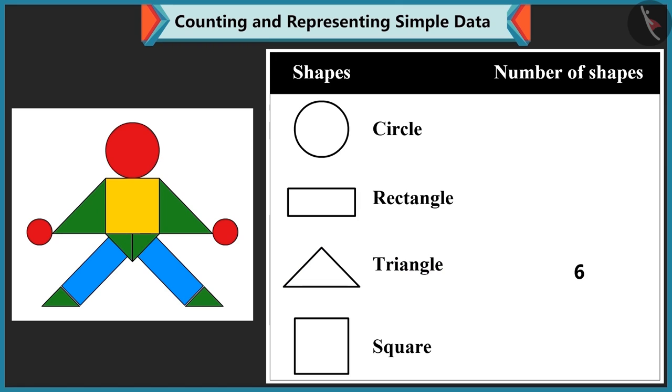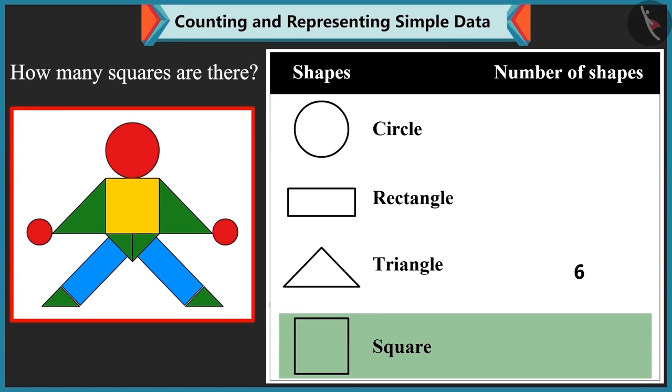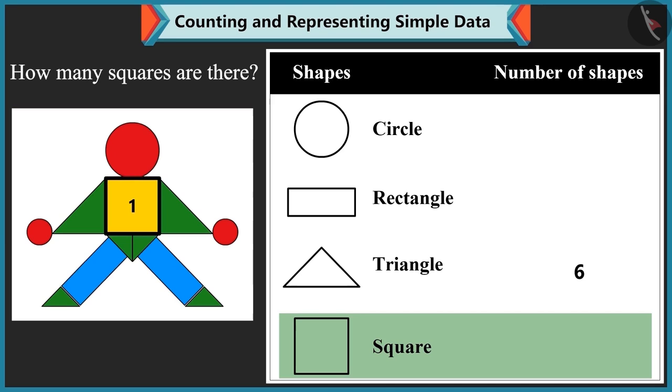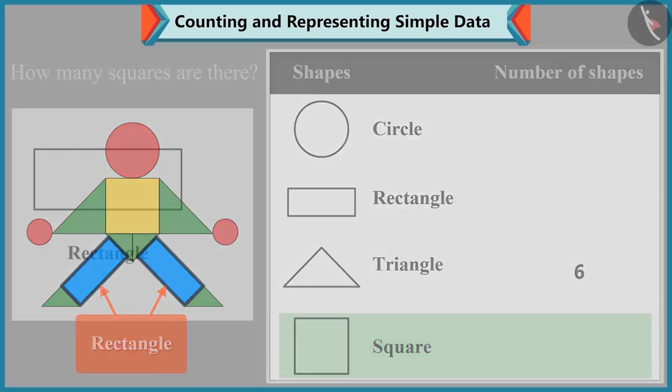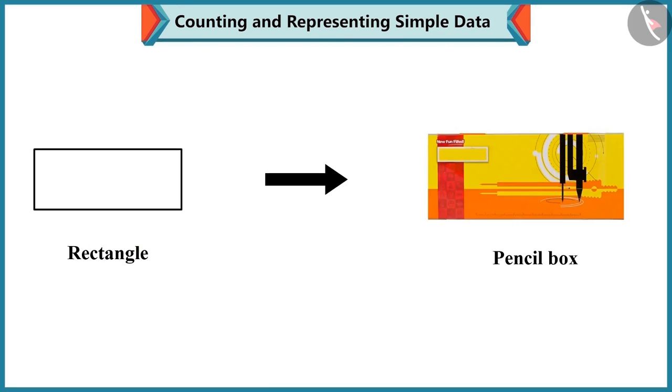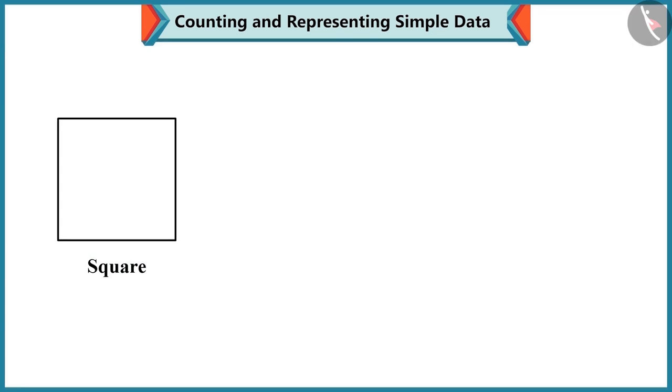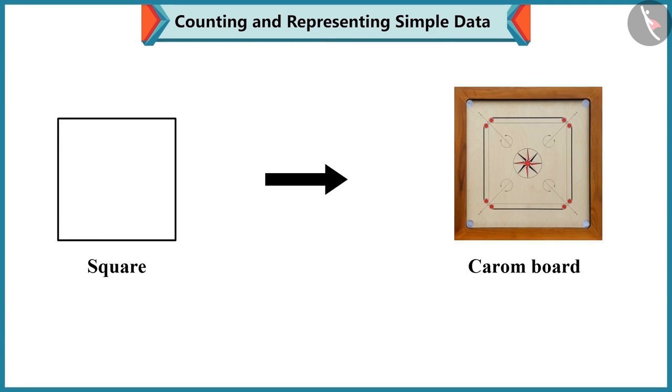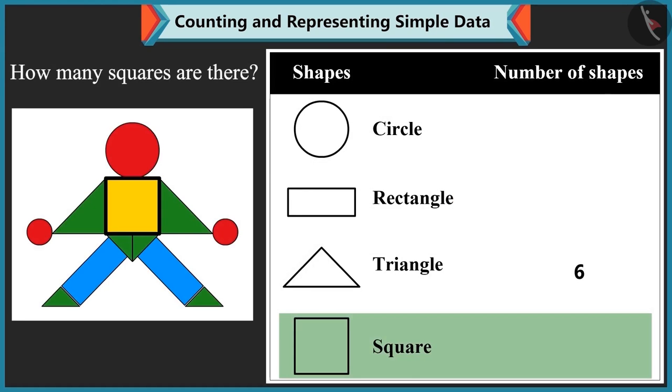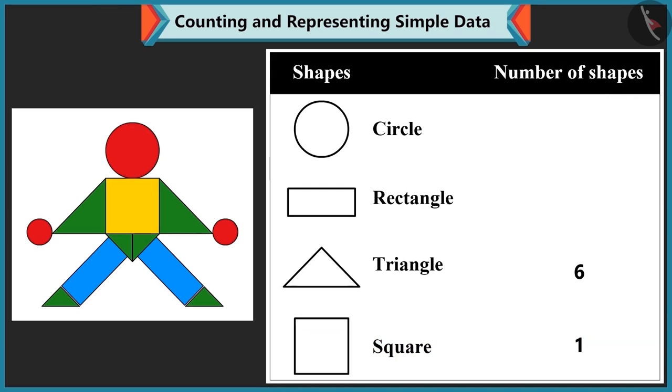Well done. Now, tell me how many squares are there. 1, 2, 3. Oh, no, Bubbly. There is only one square here. Mummy, this is also a square, right? No, Bubbly. This is a rectangle. This shape is same as your pencil box. Okay. This is a rectangle. Yes. And the shape of the square is the same as your carom board. Okay. So, there is only one square in this picture. Very good.